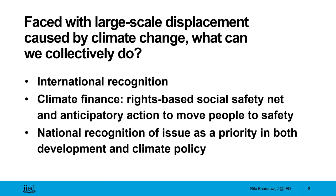Second, we need to extend financial, technical, and policy support to the least developed countries for them to be able to manage the risk of climate migrants — firstly, for them to take anticipatory action and move people away from marginal areas where displacement becomes inevitable, and secondly, to help them undertake in-situ adaptation efforts so that people are not forced into distress migration in the event of climatic impacts.